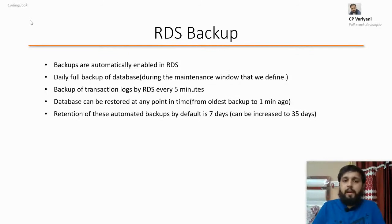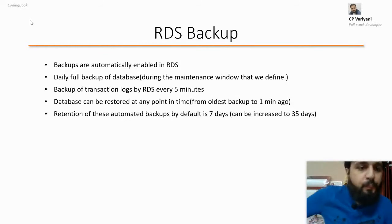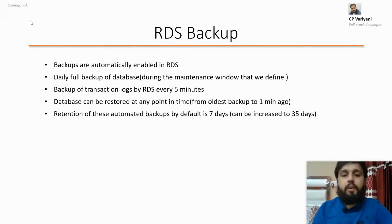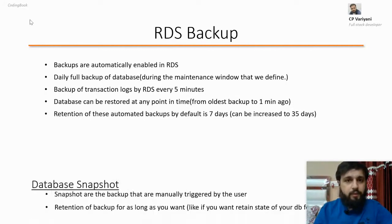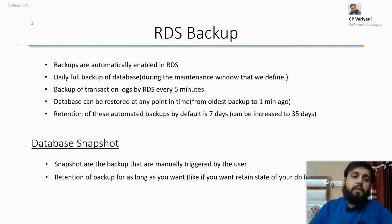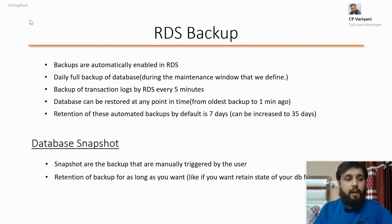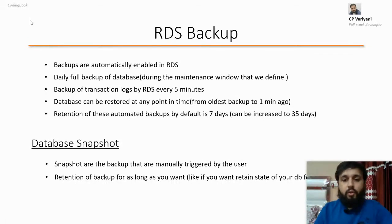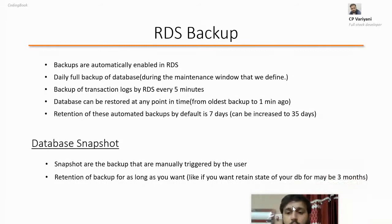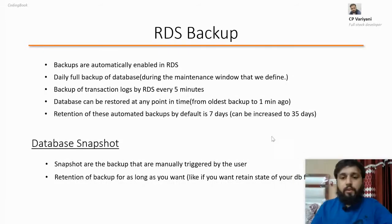RDS backups are automatically enabled. There is a daily full backup of the database, and transaction logs are backed up by RDS every five minutes, so the database can be restored at any point in time. The retention of automated backups is seven days by default but can be increased up to 35 days. Database snapshots are manually triggered by a user — for example, right now you want a backup of your database, you click the snapshot button on the database menu, and it creates your backup immediately. Retention of snapshots is for as long as you want.